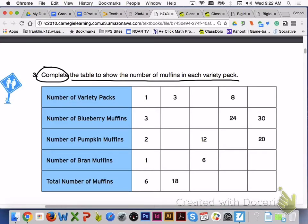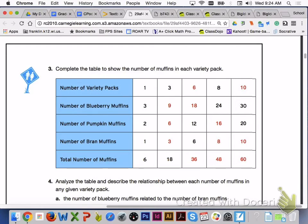Turn to page 311, answer number 3 with your group members. Here is what your table should look like for number 3. Please check over the numbers carefully and make sure that you have the correct number of muffins in each variety pack.